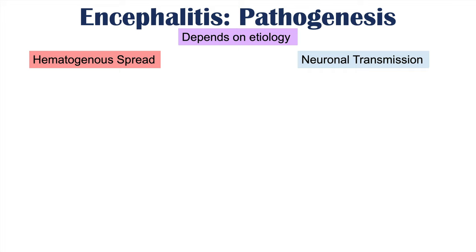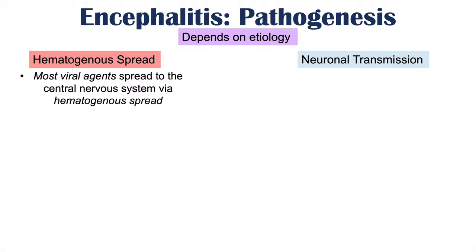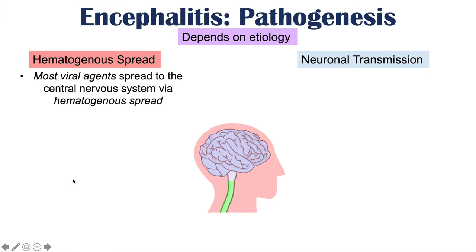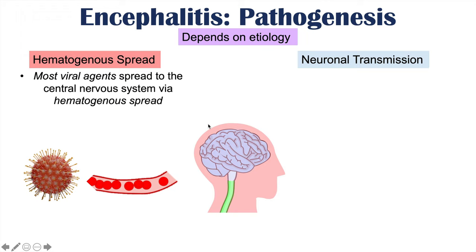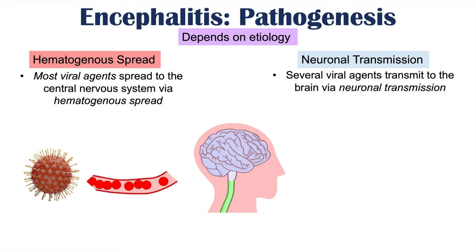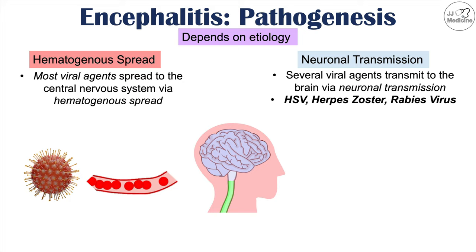Almost all viral agents spread to the central nervous system via hematogenous spread — they multiply, travel through the bloodstream, and enter the CNS to infect the brain. However, a few viral agents transmit to the brain via neuronal transmission. These important viruses include herpes simplex virus (HSV), herpes zoster virus, and rabies virus. These are the viruses that utilize neuronal transmission to enter and infect the brain to cause encephalitis.